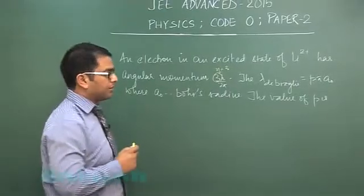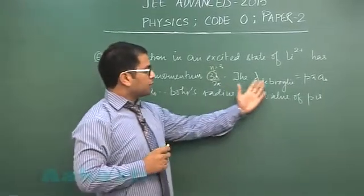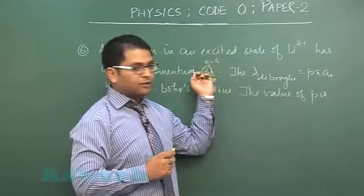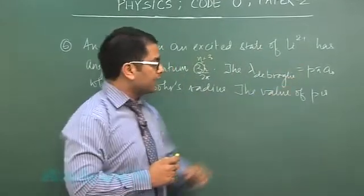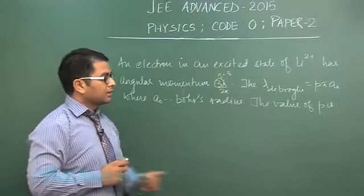And the de Broglie wavelength of this particular orbit is pπa₀ where a₀ is the Bohr's radius. We need to calculate p.